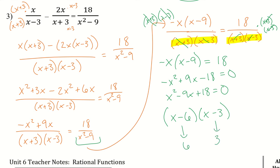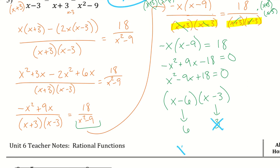I need to double check for restrictions. x cannot equal positive or negative 3. Therefore, x cannot equal 3, so x just equals 6.